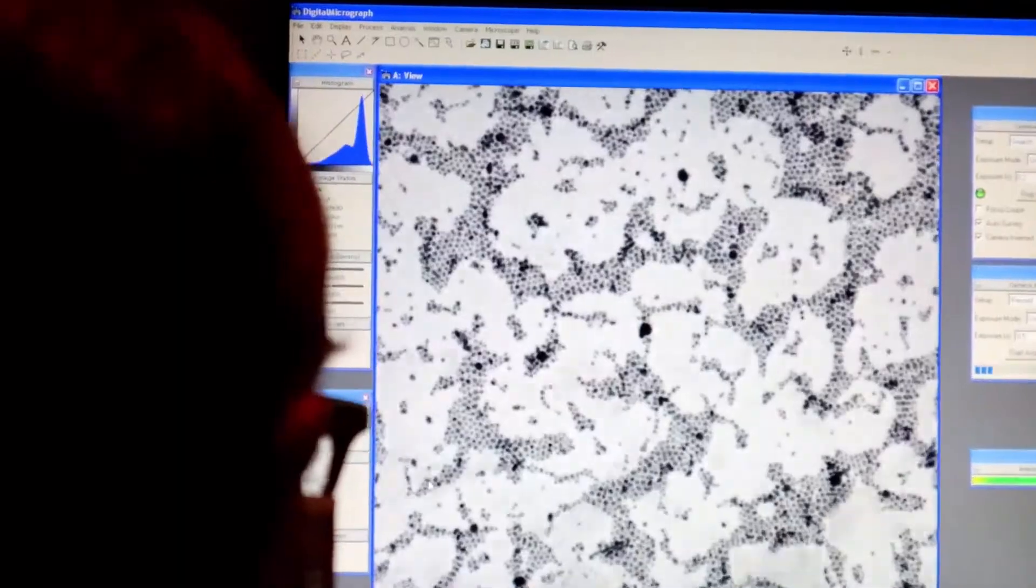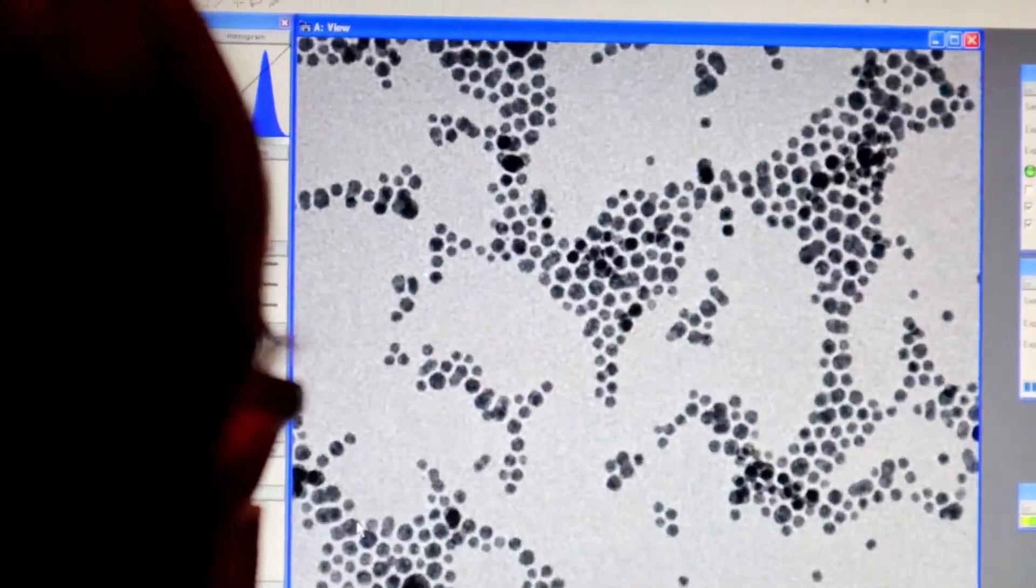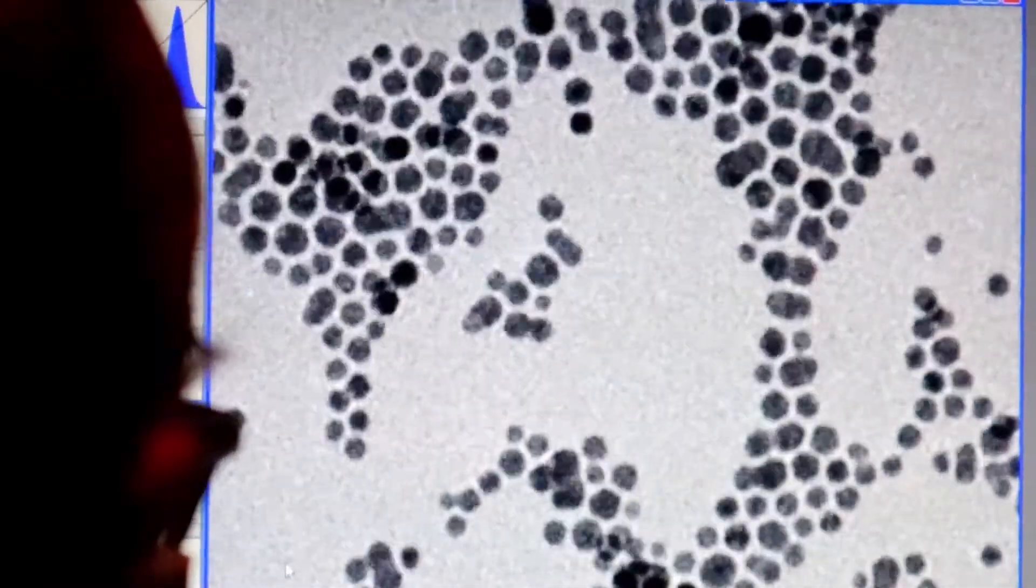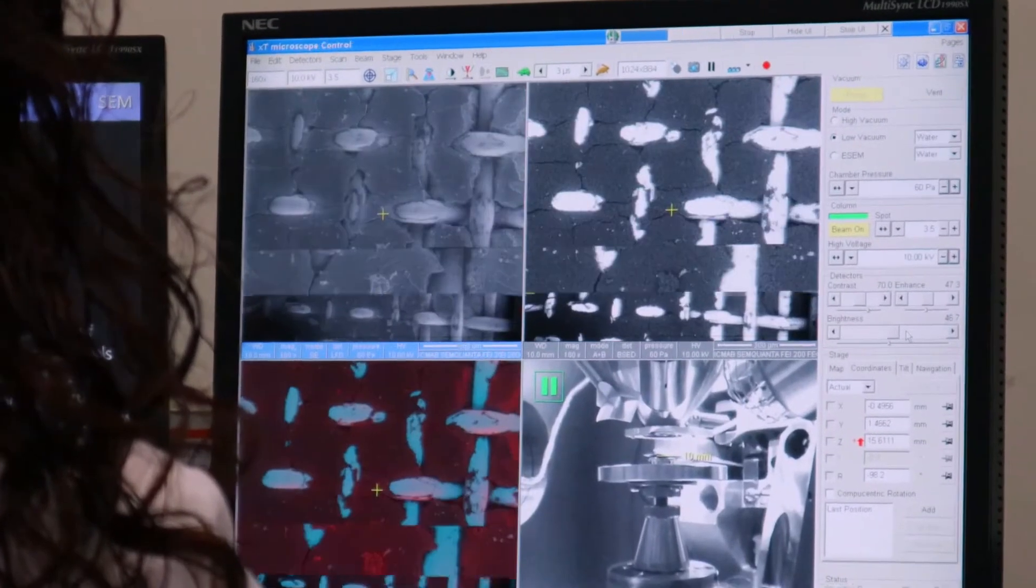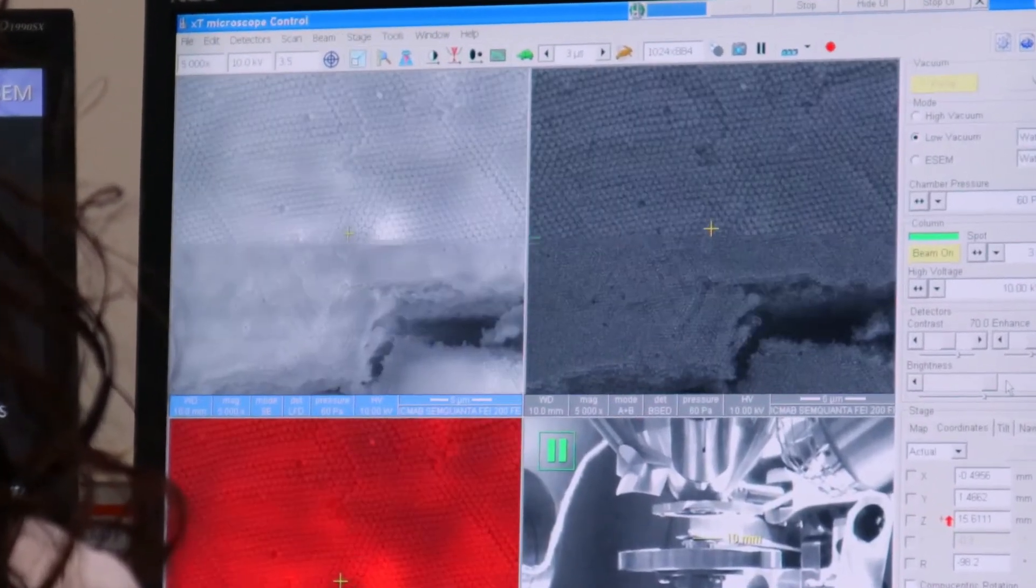These two microscopes allow us to see things at the nanoscale, because unlike optical microscopes that use light, SEM and TEM use electrons to obtain the image.